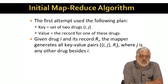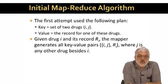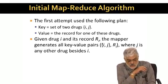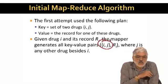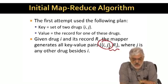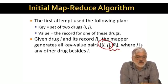So what does the mapper do? Given drug i and its record, the mapper needs to generate 2,999 key value pairs, one for each other drug j. The key value pair for j has the key that is the set containing i and j. And the value is the record for i. Notice that the mapper doesn't know the record for j, it only sees i and its record.